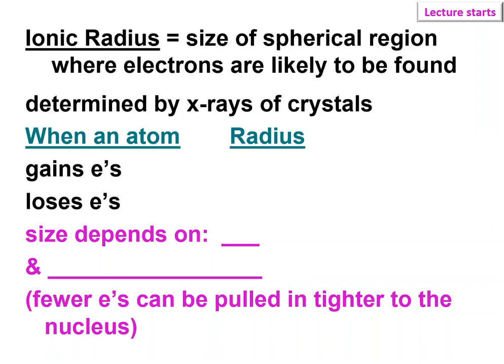This is determined by if you have a crystal of an ionic compound you can basically bombard it with x-rays and depending on how they're reflected back and bent,